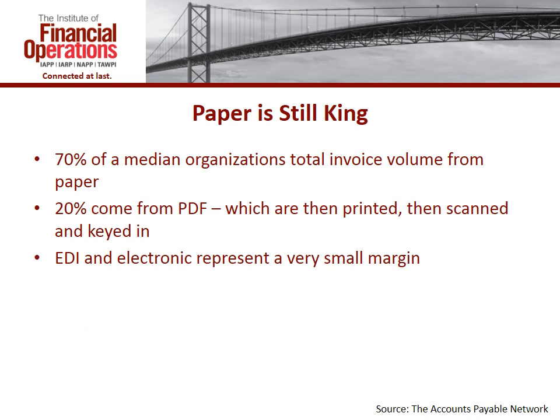Here's one of the big problems with automation: paper is still king. You can have the greatest solutions in place and be part of a wonderful e-invoicing network, but if your vendors are still submitting invoices in paper format, how do you automate that? How do you take a hard copy invoice and eliminate the need for manual keying? We're seeing 20% of invoices starting to come from PDFs — you'd think that's fantastic, we're getting invoices electronically. But what's happening more often than not is that you're printing those PDFs and manually keying them into your system, so we're not seeing the full benefit.